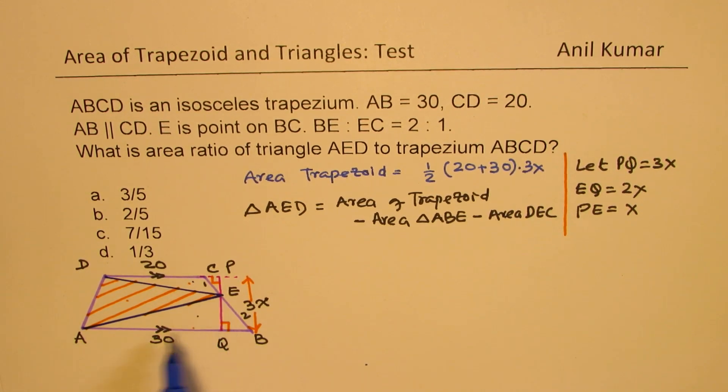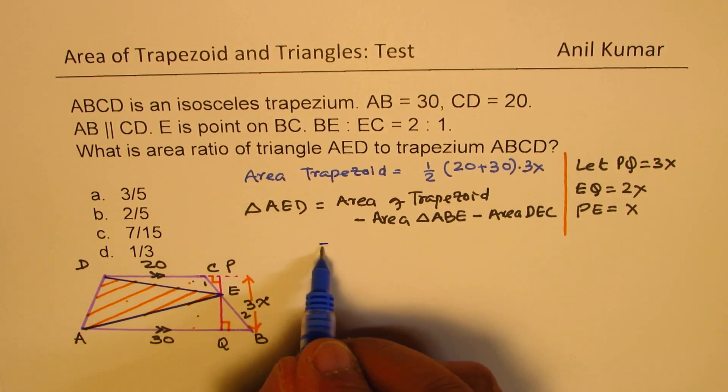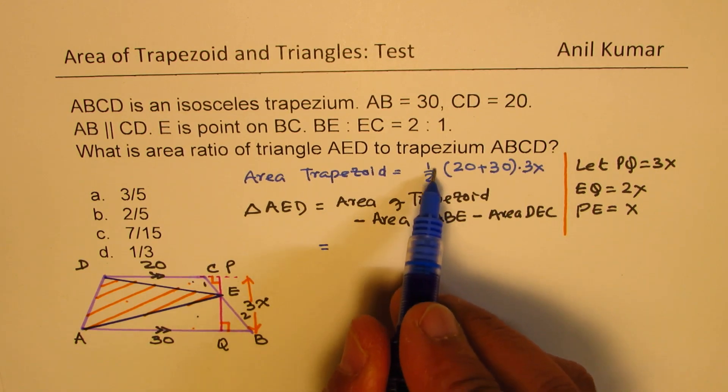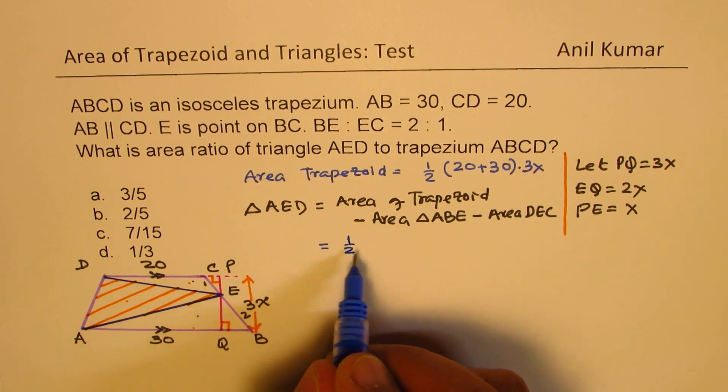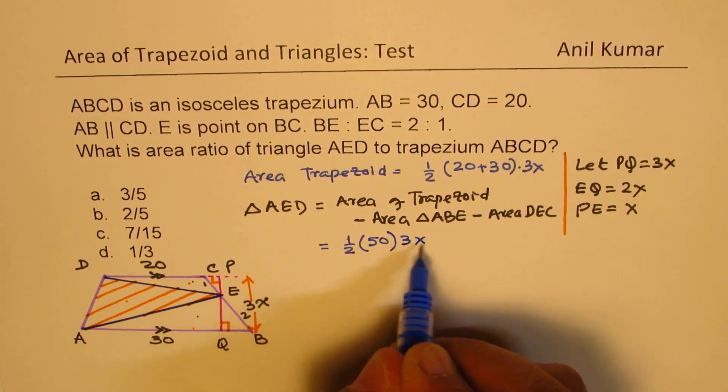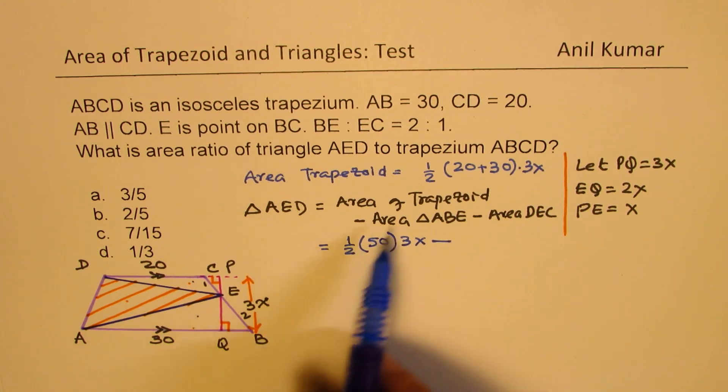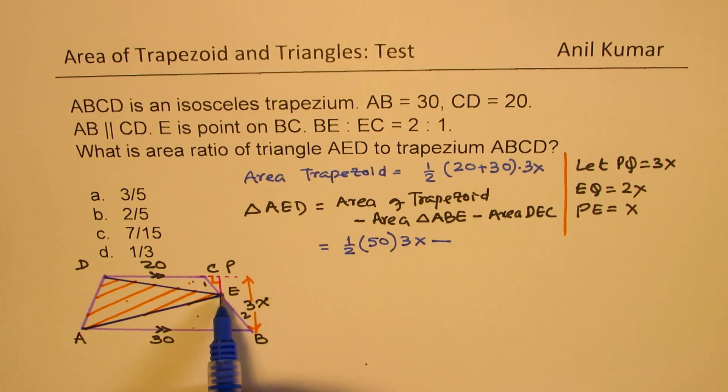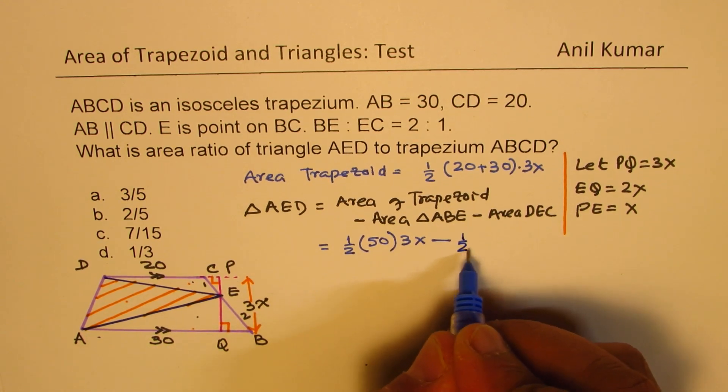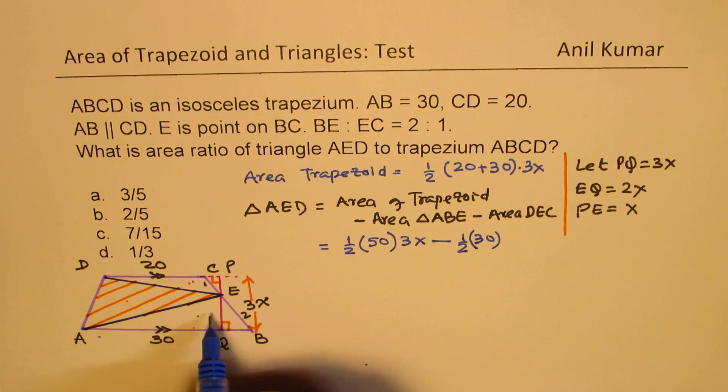Area of triangle is half base into height. So we can write this as equal to area of trapezoid is this, which is half of 50 times 3X minus area of ABE will be base is this time 30. So half of 30 times height, which is 2X.